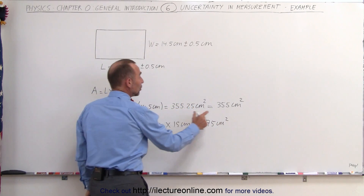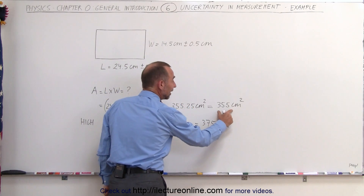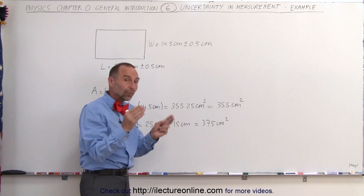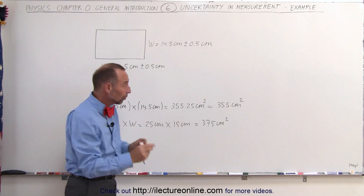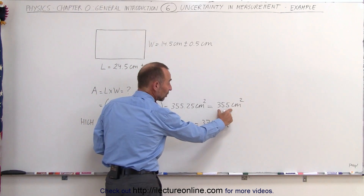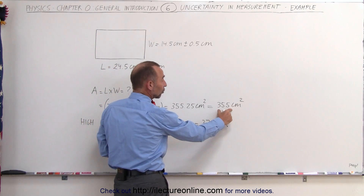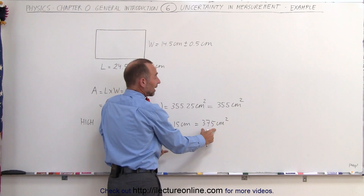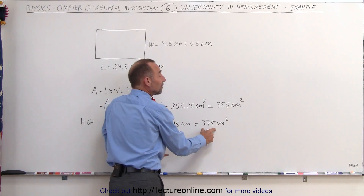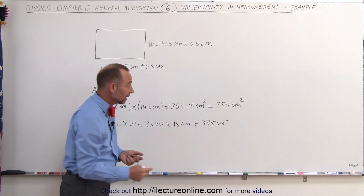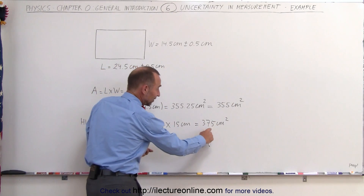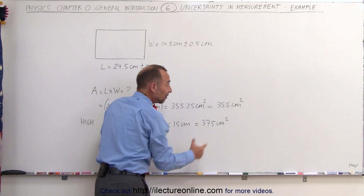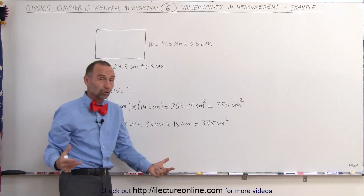So notice: if the numbers were absolutely correct and there's no uncertainty at all, we know the area would be 355 square centimeters. But it could be as high as 375, because there's a certain amount of uncertainty. 375 is 20 bigger than 355 — we just don't know.